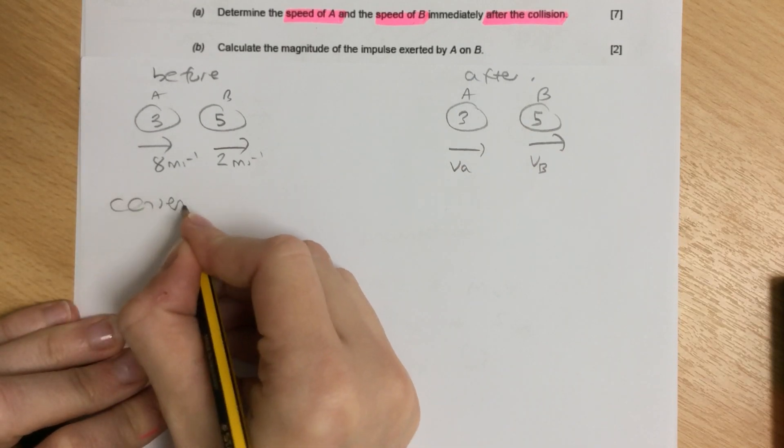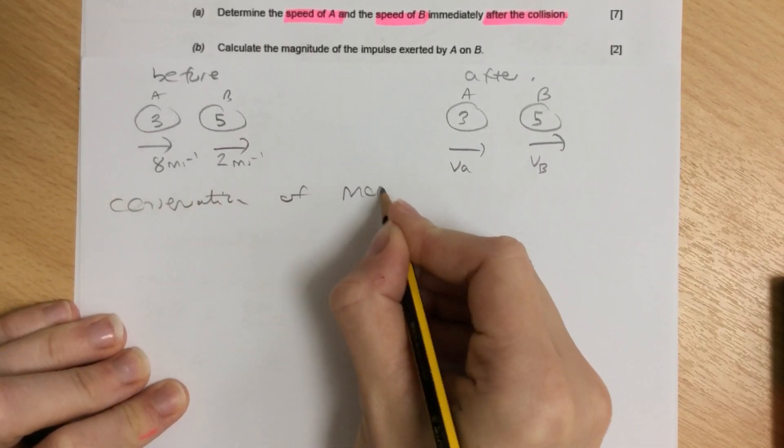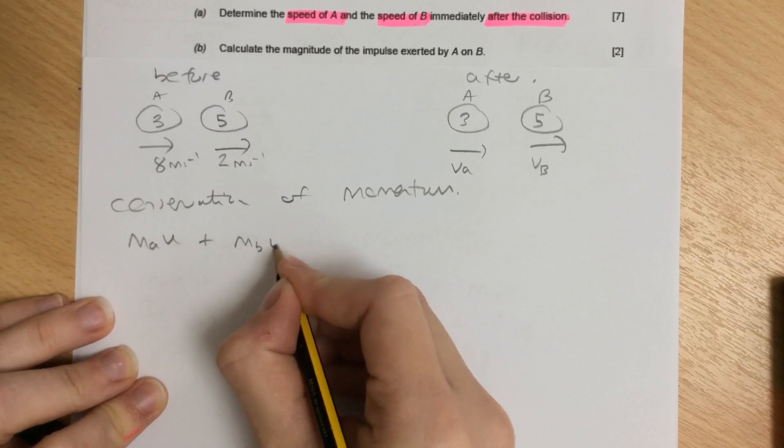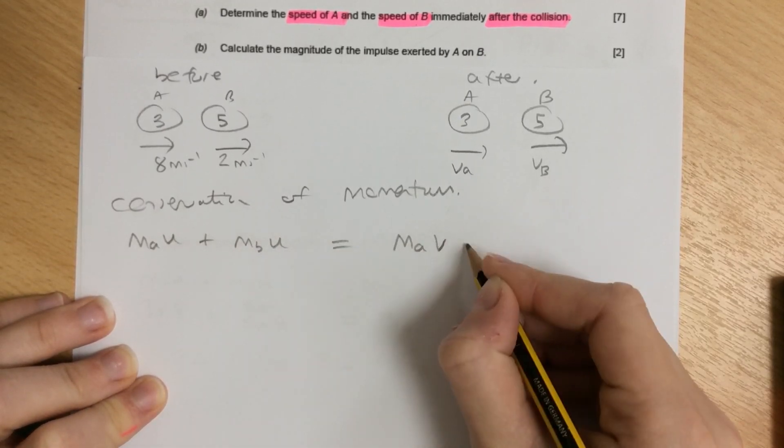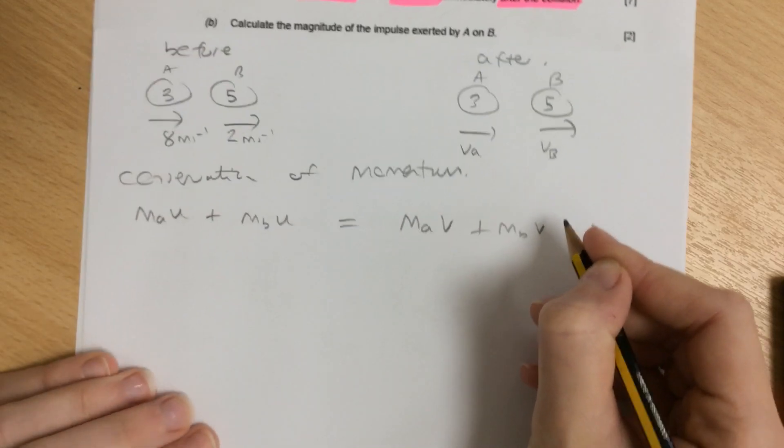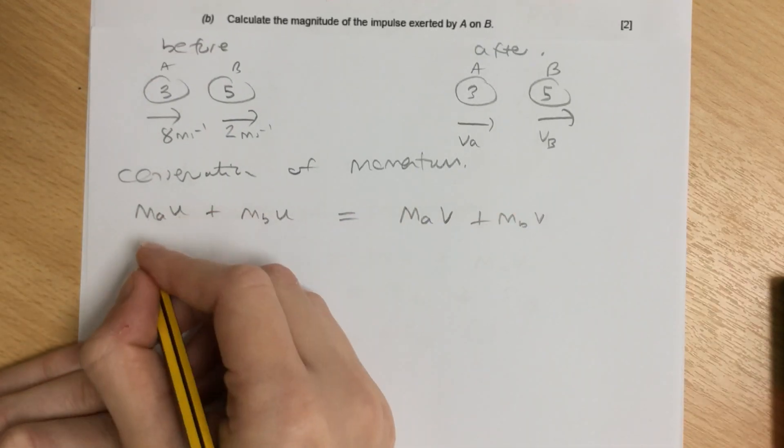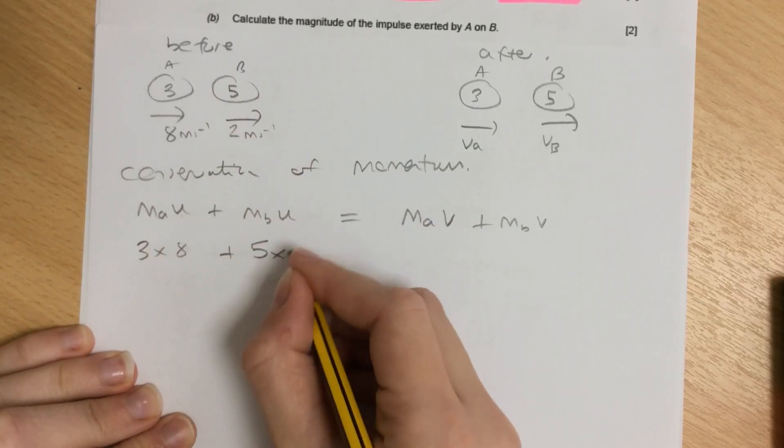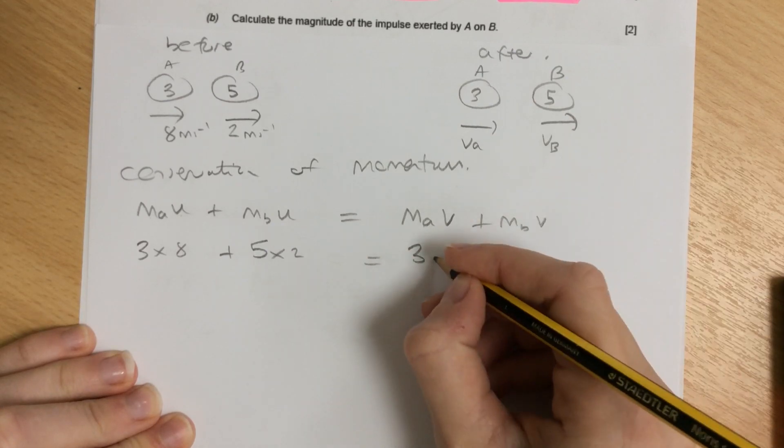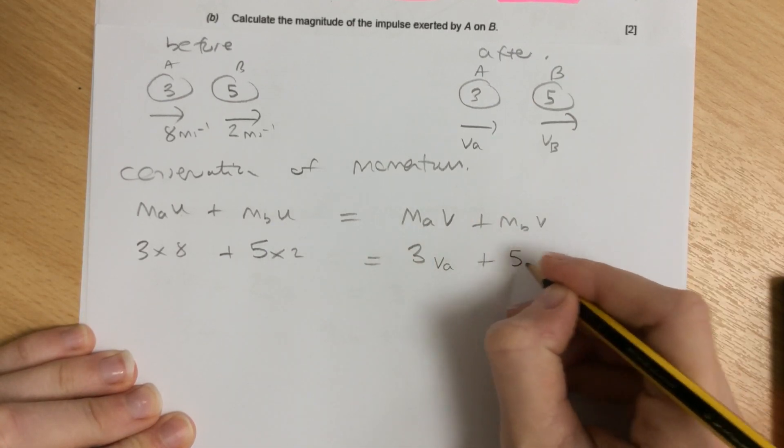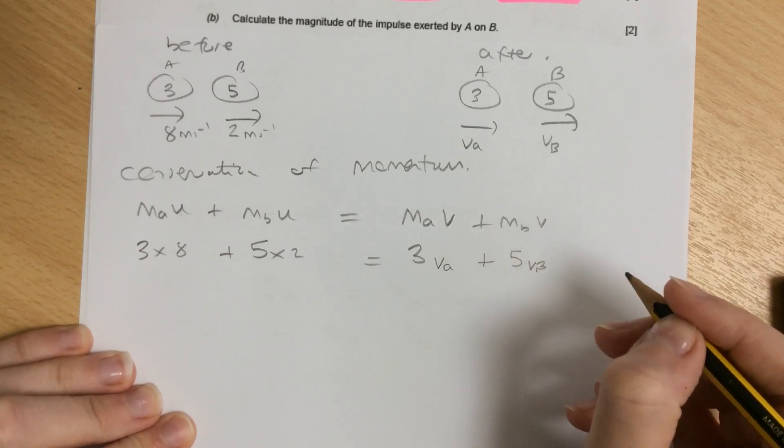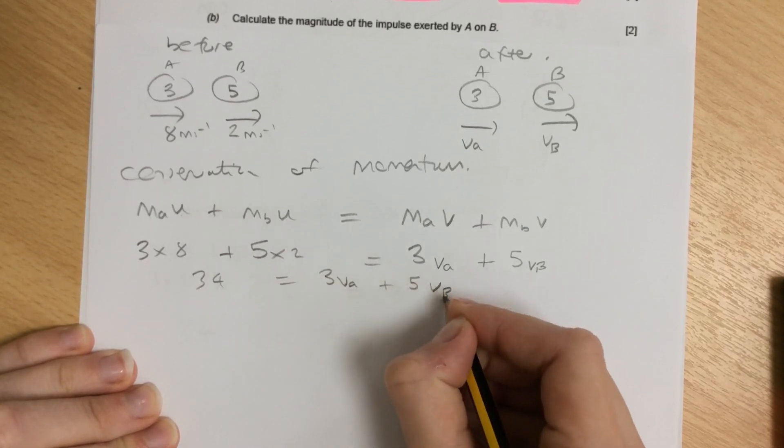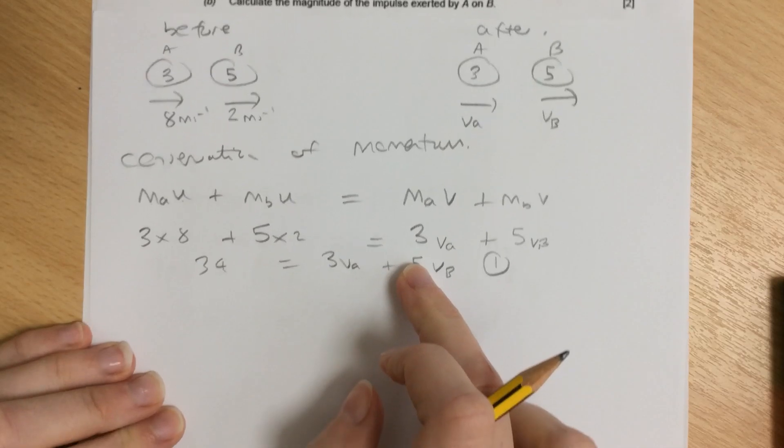To find the speeds, we use conservation of momentum, which states that mass A times initial speed plus mass B times initial speed equals mass A times final speed plus mass B times final speed. So 3 times 8 plus 5 times 2 equals 3VA plus 5VB. Working this out gives us 34 equals 3VA plus 5VB. That's our first equation with two unknowns, so we can't solve it yet.